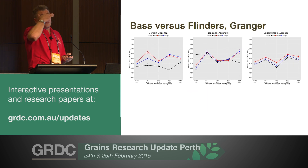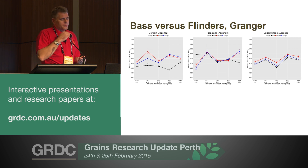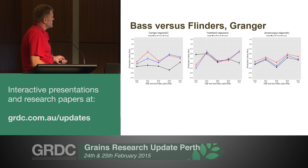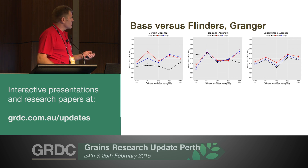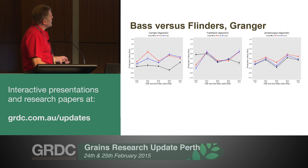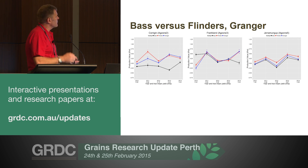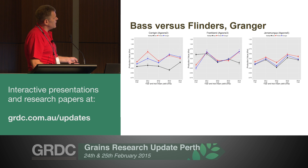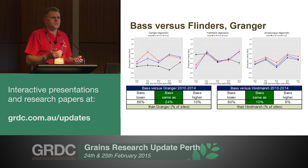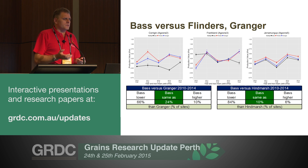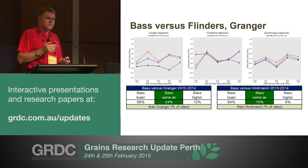Bass is the variety most farmers in high-rainfall areas are currently growing, looking at whether to move to Flinders or Granger. The NVT data says Bass is lower yielding than both Flinders and Granger. At the Gerramungup site, Bass is generally the lowest of the three varieties. Looking at Bass versus Granger, in nearly seven out of ten trials Bass would be lower yielding than Granger, and about the same in a quarter of trials. When comparing Bass versus Hindmarsh, Hindmarsh is clearly higher yielding than Bass on a statewide basis.